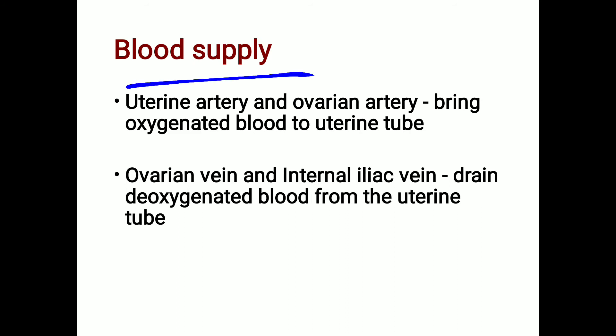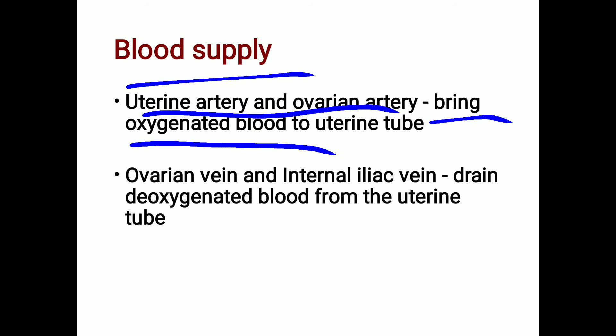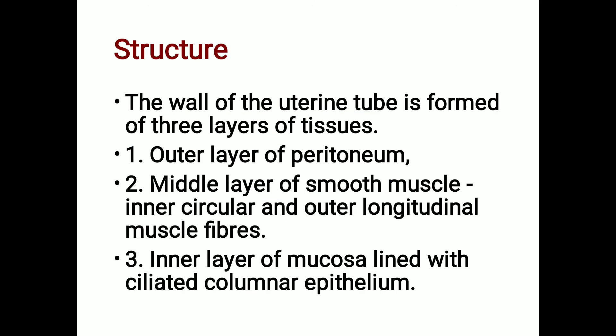Regarding blood supply: the uterine artery and ovarian artery supply oxygenated blood to the uterine tube. The ovarian vein and internal iliac vein drain deoxygenated blood from the uterine tube.